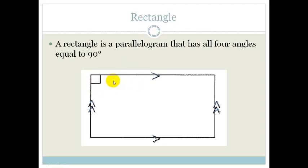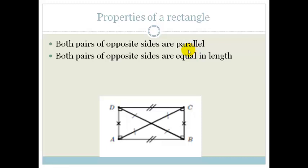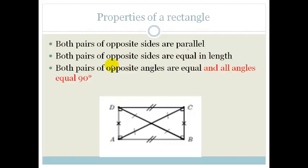Now let's talk about the properties of a rectangle. First of all, both pairs of opposite sides are parallel — we expected that because this is a special case of a parallelogram. Also, both pairs of opposite sides are equal in length. Both pairs of opposite angles are equal, and what's specific for a rectangle is that all the angles are equal to 90 degrees.